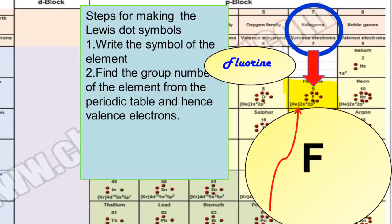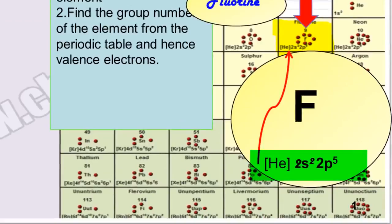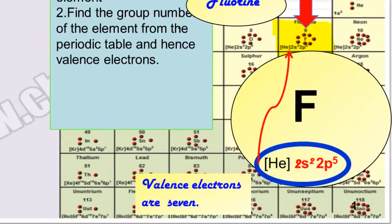We can predict its valence electrons with the help of electronic configuration. In the outermost shell of fluorine atom, there are seven electrons, so its valence electrons are seven.